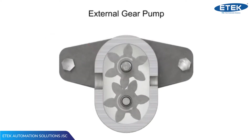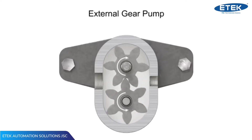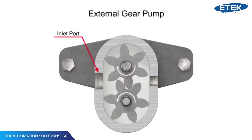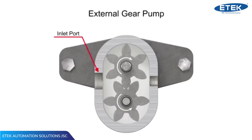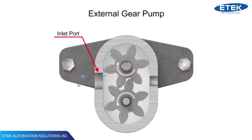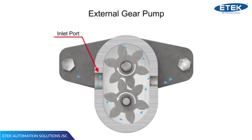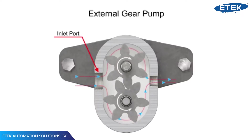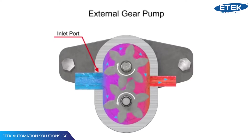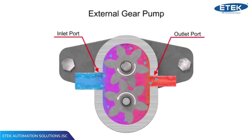As the gears rotate away from each other and come out of mesh, they create an expanding volume on the inlet side of the pump. This creates a vacuum at the inlet port, allowing fluid to flow into the pump. Then fluid flows into the cavities and is trapped by the gear teeth. As the gears rotate, a flow path is created around the outside of each one. Fluid trapped in the slots between teeth is carried around and discharged into the cavity with the outlet port.